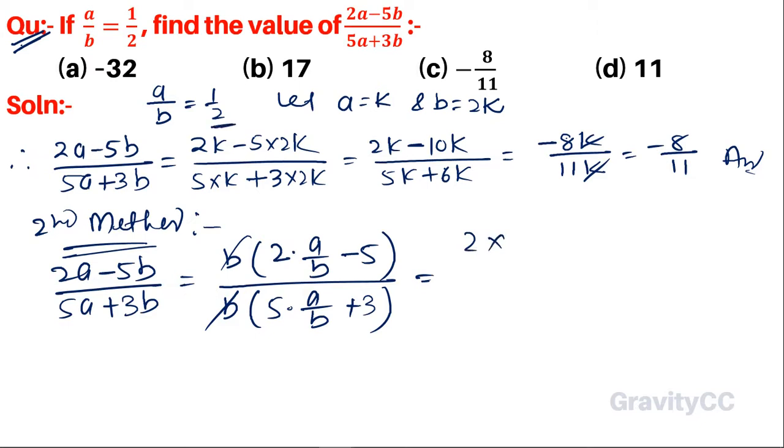Substitute a/b = 1/2: (2(1/2) - 5)/(5(1/2) + 3) = (1 - 5)/(5/2 + 3) = (2 - 10)/2 over (5 + 6)/2.